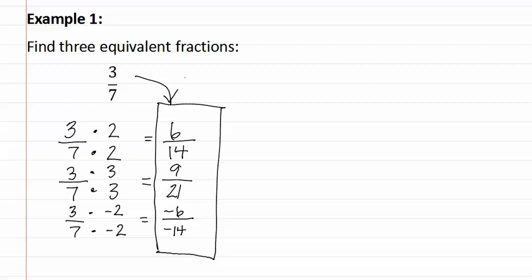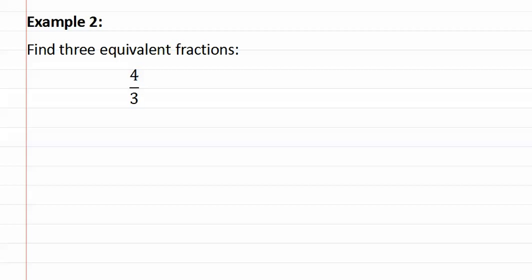Let's look at example two. Example two asks us to find three equivalent fractions of four-thirds. Remember, we can pick any number we want to multiply four-thirds by. Let's multiply by three. Remember, we must multiply the numerator and the denominator by the same number. Four times three is twelve, three times three is nine.